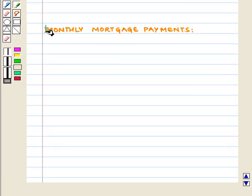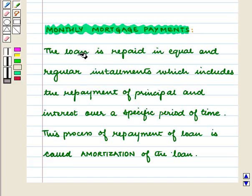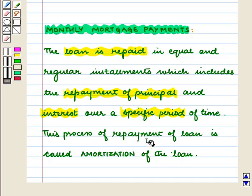Now we will discuss monthly mortgage payments. The loan is repaid in equal and regular installments, which includes the repayment of principal and interest over a specific period of time. This process of repayment of a loan is called amortization of the loan. We can calculate the amount of amortization or monthly mortgage payments using a table or a formula.